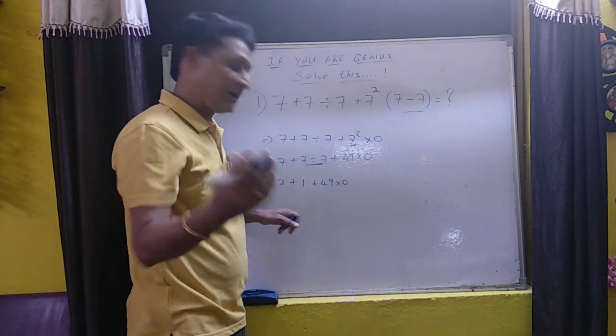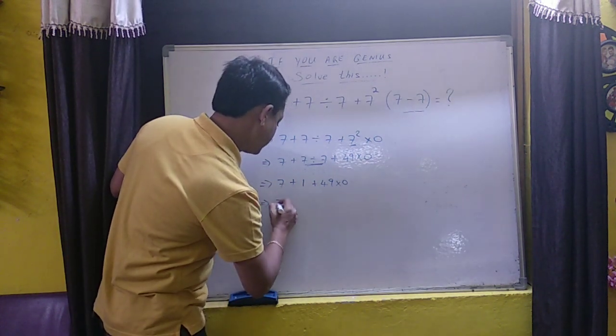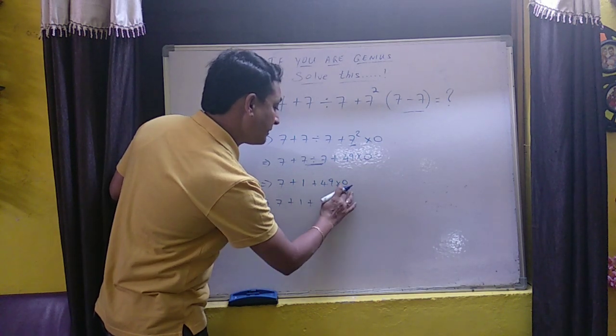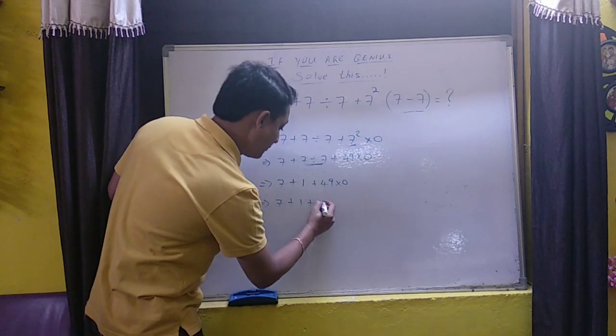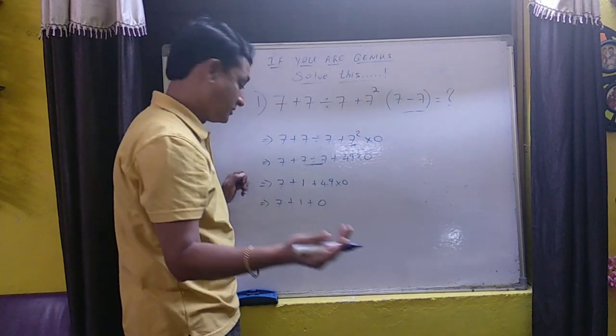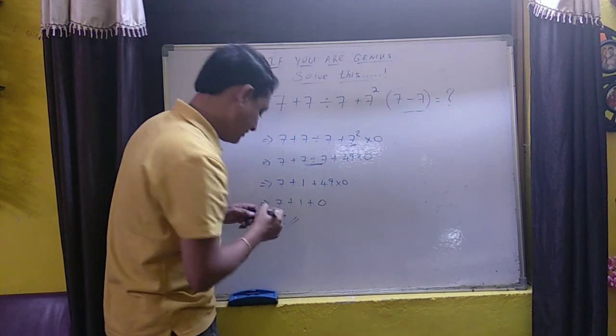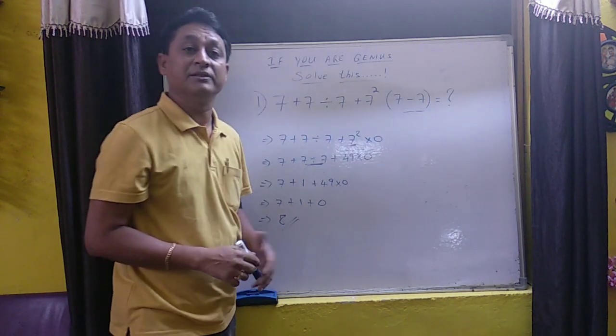Now let's go with the multiplication part. Here, 7 plus 1 plus 49 into 0. Anything multiplied by 0 is 0. So we have 7 plus 1 that is 8. And your answer for this problem is 8.